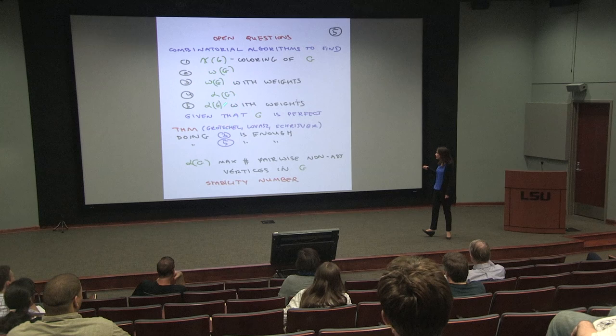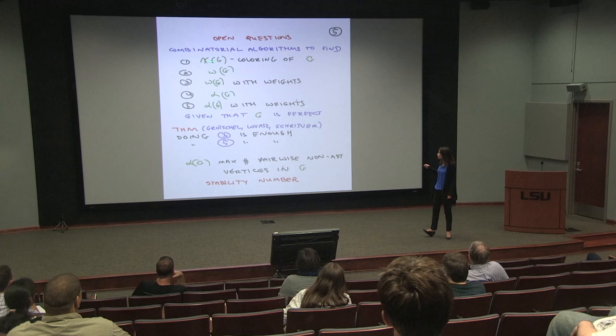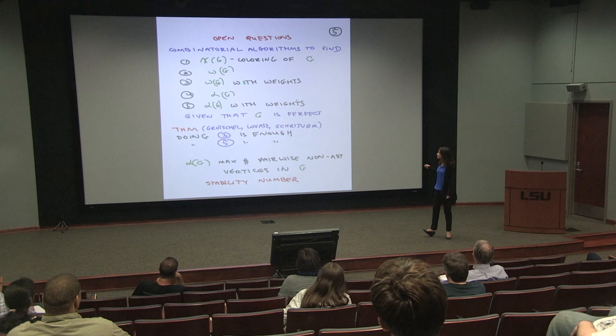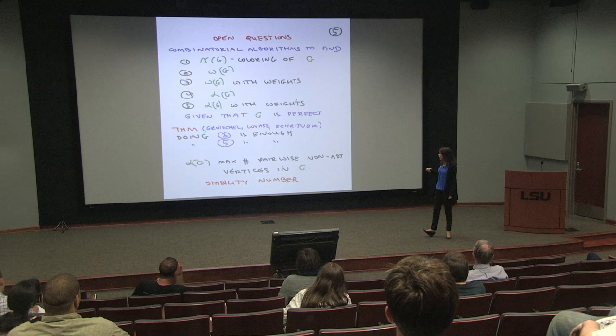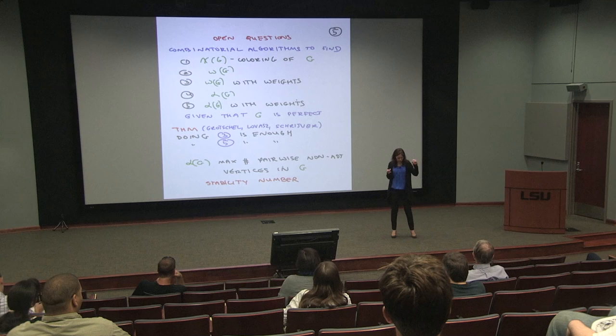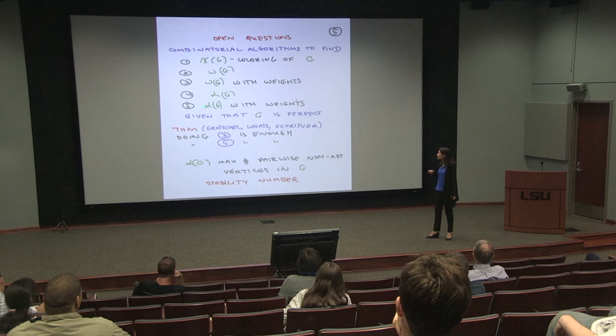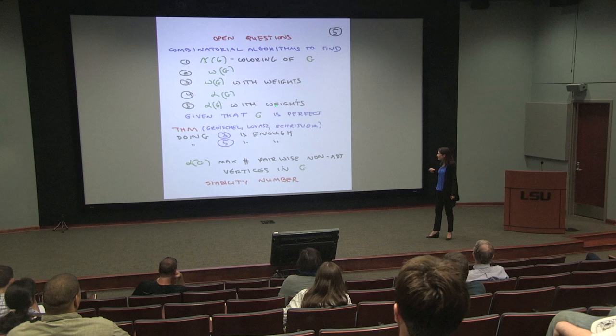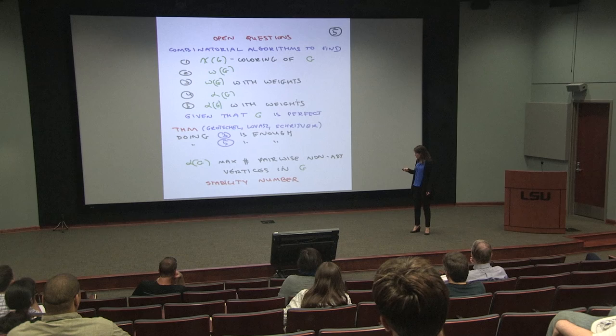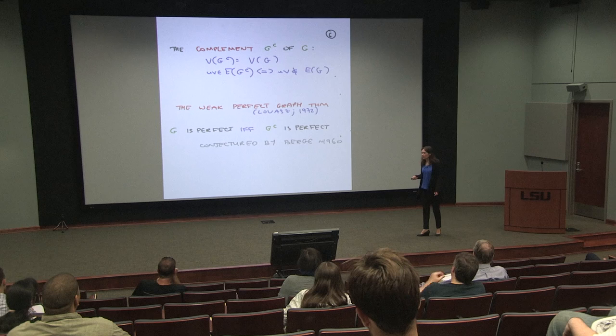These five problems are all closely related. To get an optimal coloring, it's enough to be able to find the weighted clique — the heaviest clique. Grötschel, Lovász, and Schrijver showed how to move from max clique to optimal coloring, just combinatorially. It's also enough to solve max-weighted stable set. So to summarize: we want an optimal coloring, but it's enough to solve the optimal weighted clique problem.